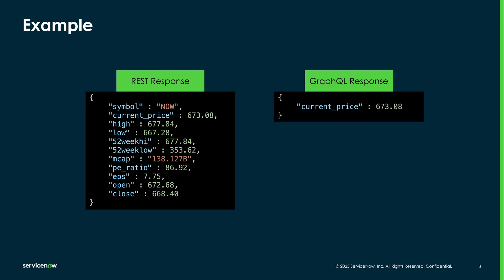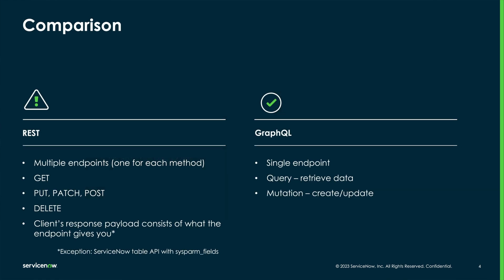With GraphQL, the client or consumer specifies what is desired. If all you want is the current stock price, that's all you get back. I know this is a fairly simple and small example, but you get the idea where speed and cost are impacted when you scale this up.